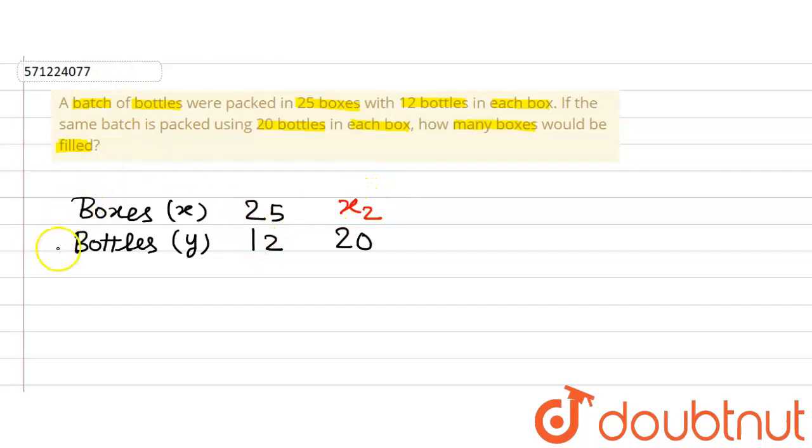Now what we can observe is that if the number of bottles that are kept in each box is increased, then we will require less number of total boxes to complete the total batch of bottles. That means there is an inverse variation between number of boxes and number of bottles kept in each box. So this is a case of inverse variation.